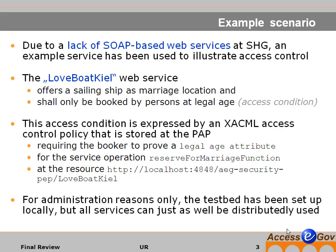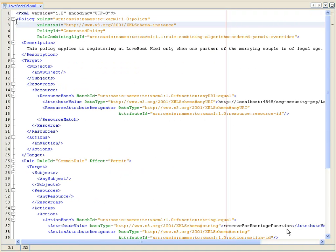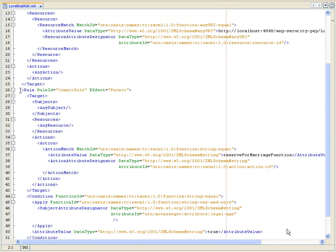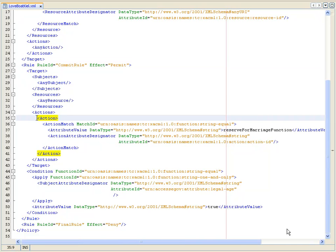The access condition is expressed by an XACML access control policy that requires the booker to prove a legal age attribute for executing the service operation reserved for the marriage function. For administration reasons only, we have set up the test net locally, but all services can just as well be distributed or used. The access control policy is actually an XML-based file with the following rule conditions for the action reserved for marriage function.